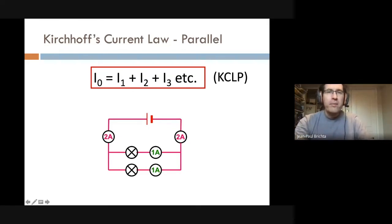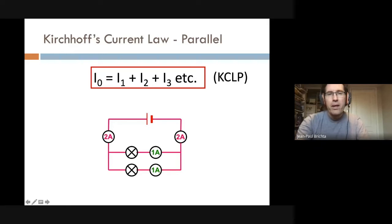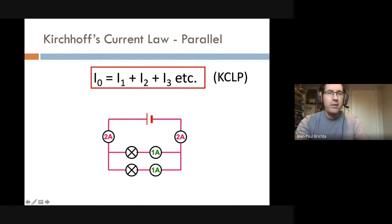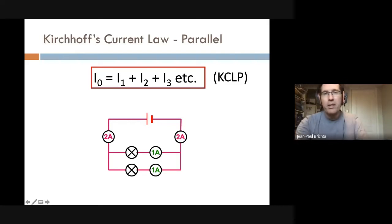Kirchhoff's current law for parallel circuits states that the total current in the circuit equals the sum of all the currents in the branches. For example, two amps come out of the battery; one amp goes down the first branch and one amp goes down the second branch — one plus one equals two amps. You can measure I₀ on either side of the battery and it should be the same.